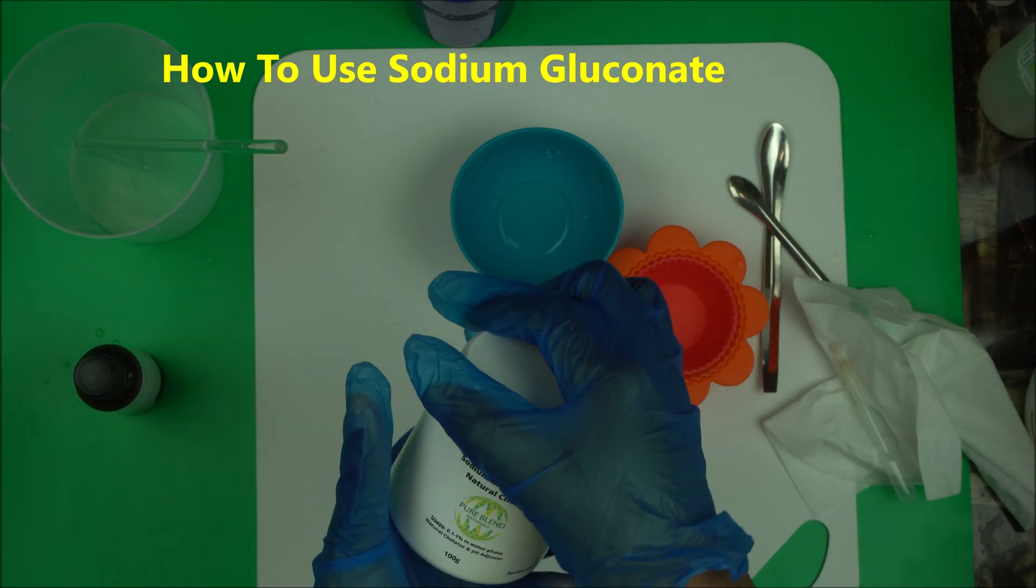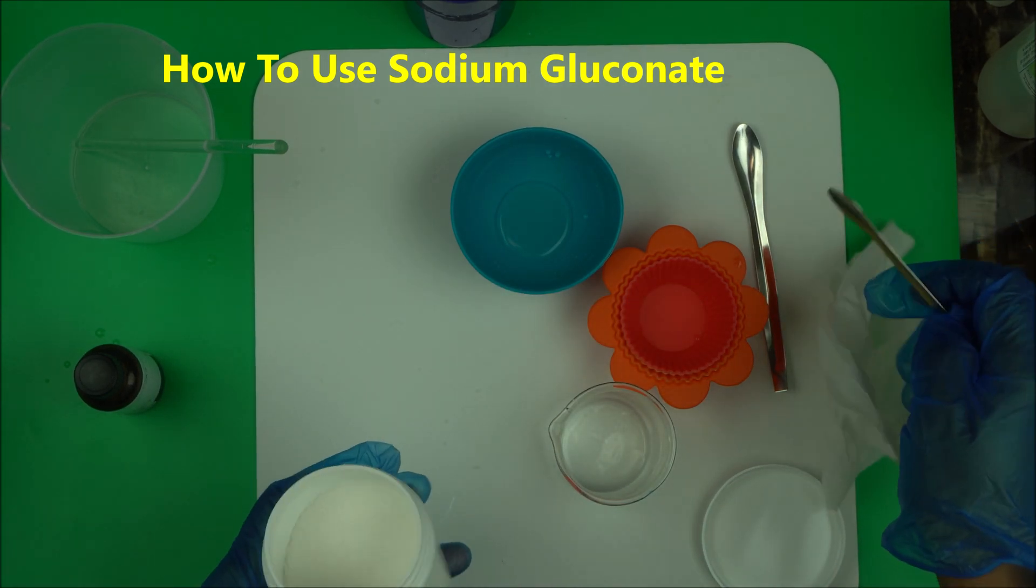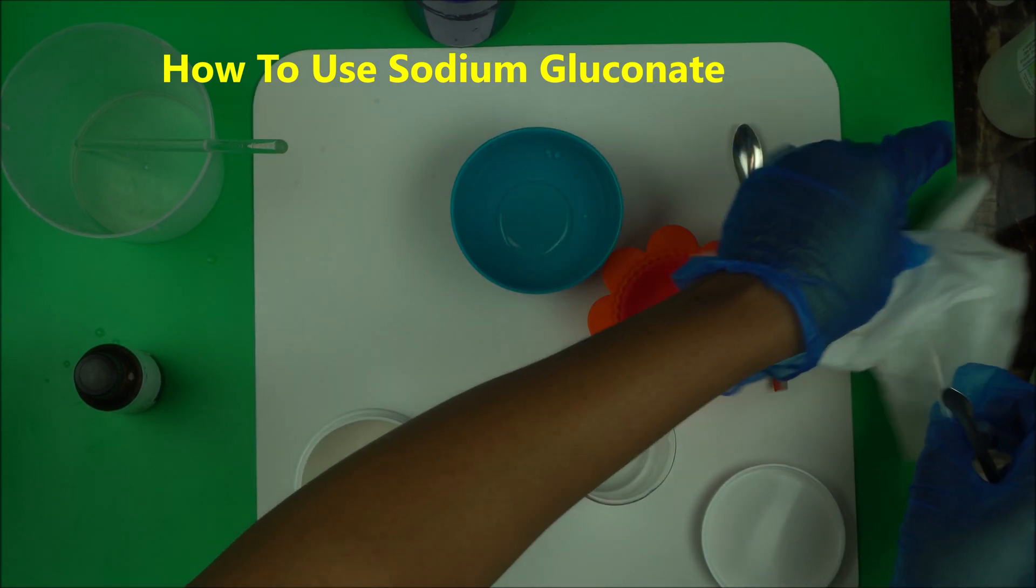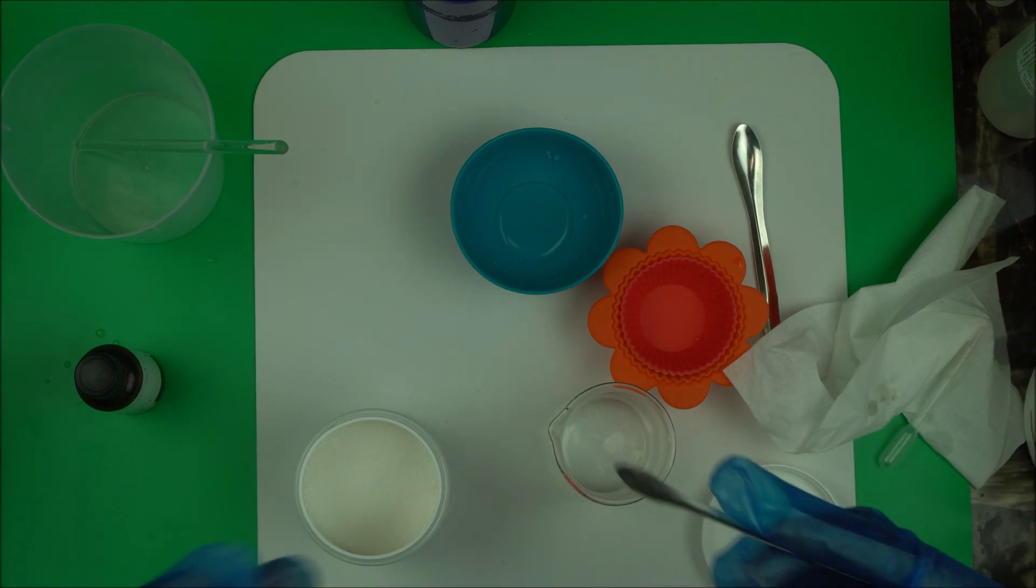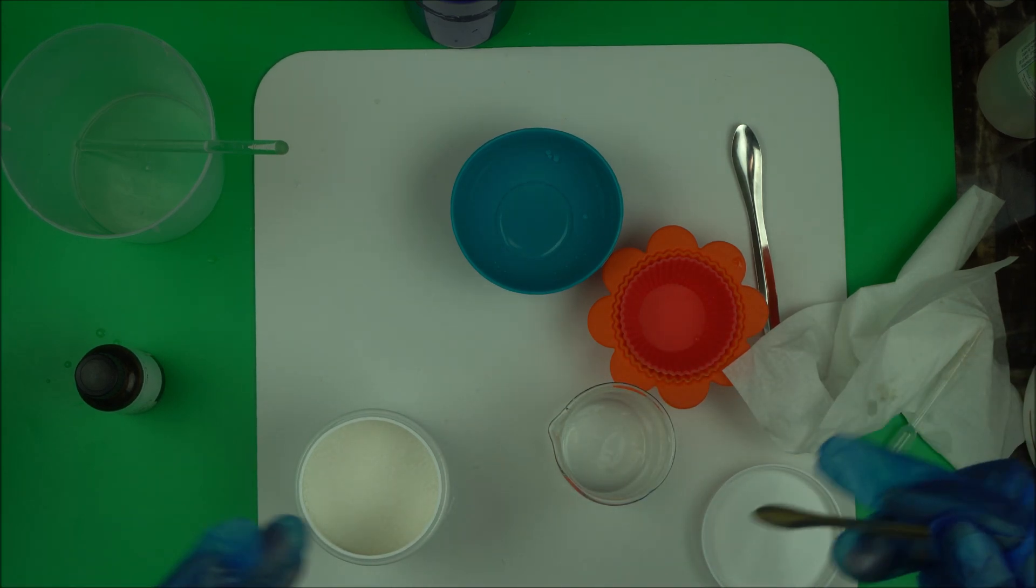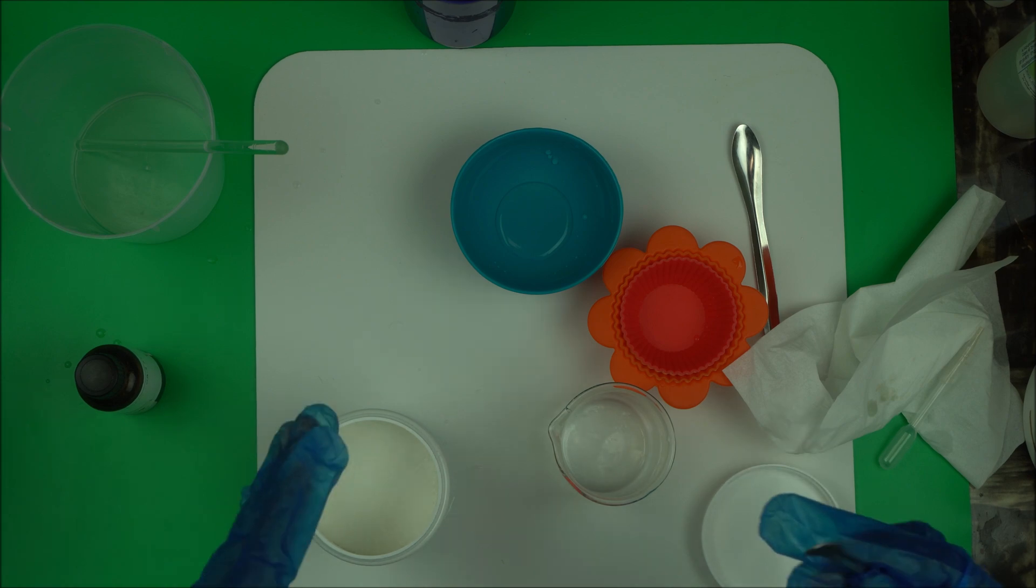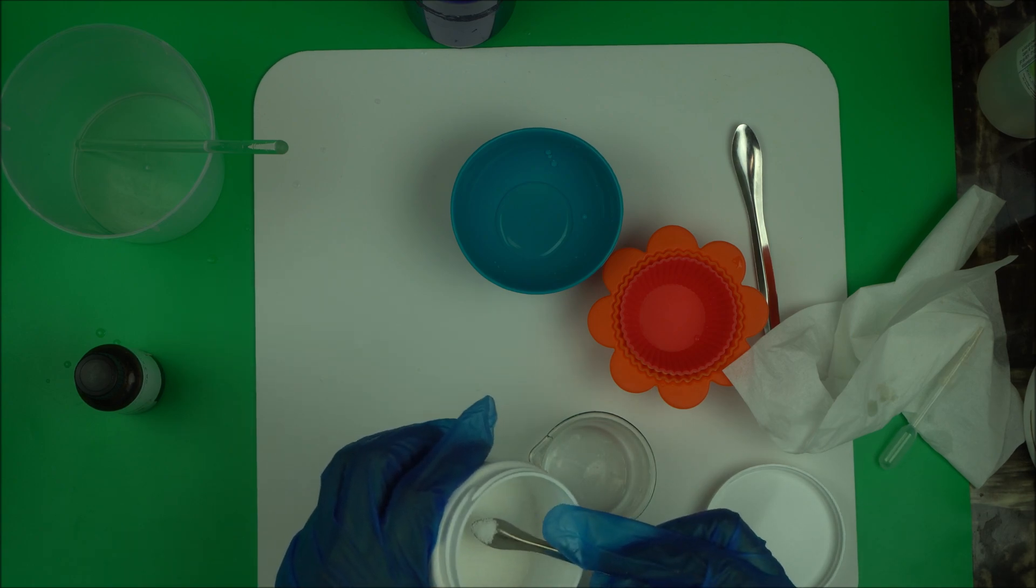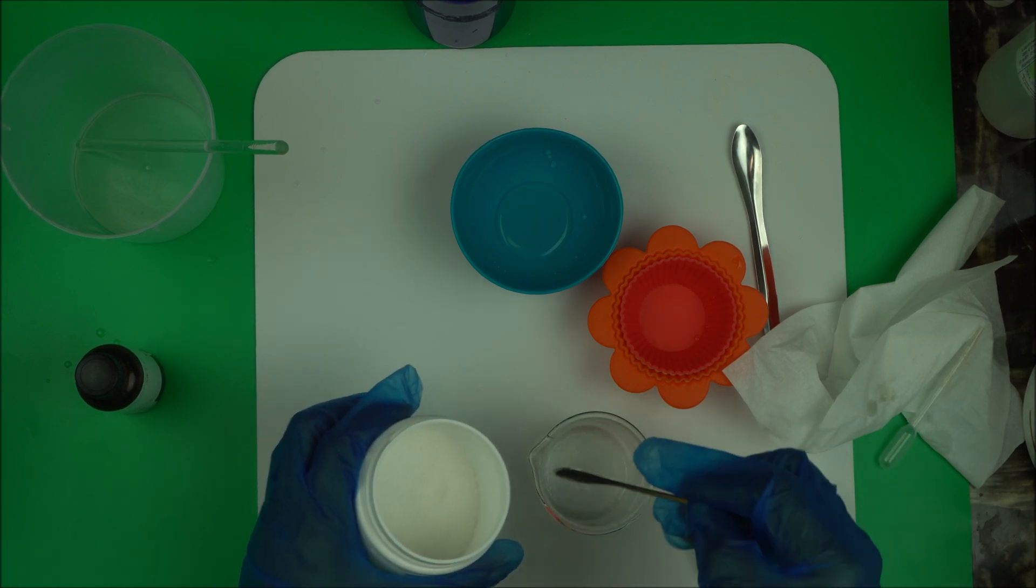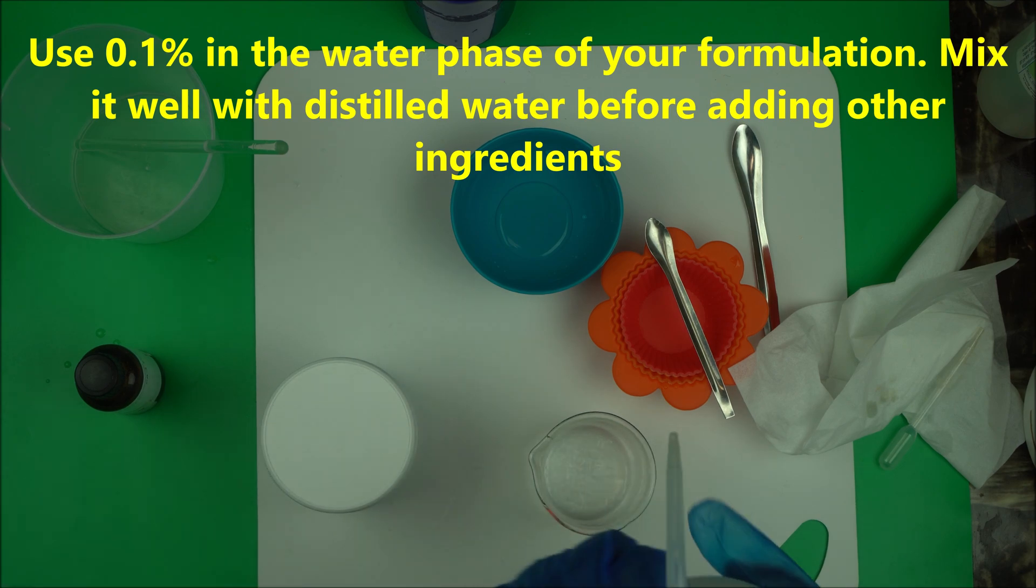Now for sodium gluconate, the powder form of chelator. Basically what do you do? You're going to also use it between 0.1% and 1%, depending on what you are making. If you're making a very risky product that you know something's going to happen along the line, basically you use more. But what I recommend for my clients and my students is that you use 0.1% of sodium gluconate and add it to the distilled water of your formulation. It's water soluble.